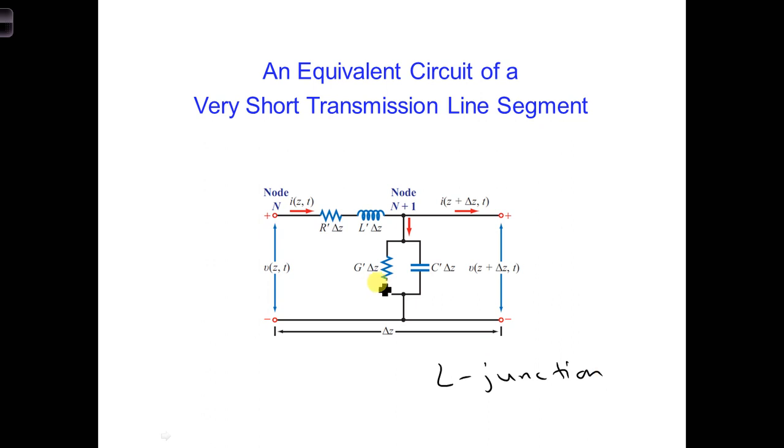Collectively, C prime, L prime, R prime, and G prime are known as the transmission line parameters.